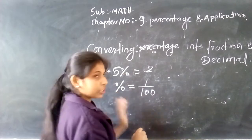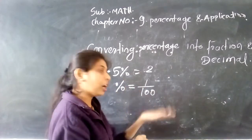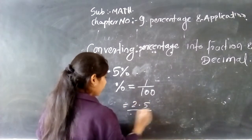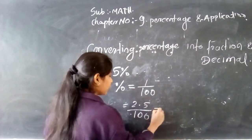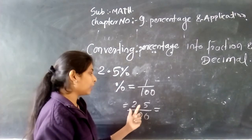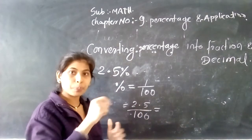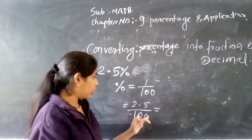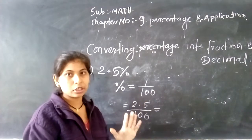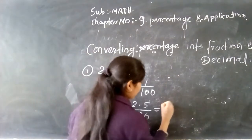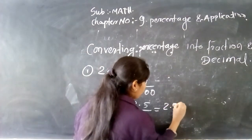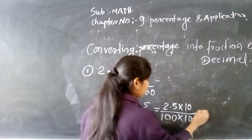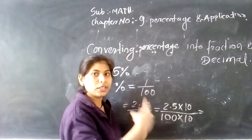हमें percent का sign हटाएंगे, यहाँ पे divide by 100 लिखना है। तो हम सीखेंगे 2.5% divide by 100 — इसको कितना होगा? अभी यह percent का, यह decimal point का — अगर हमें decimal point निकालना हो, हम numerator और denominator में 10 से multiply करेंगे। तो यह हमारा decimal point हट जाएगा।